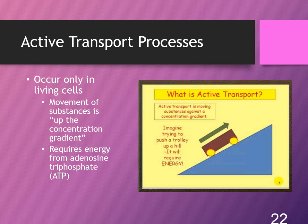As I said before, active transport is a process that utilizes energy — remember that the mitochondria is the powerhouse of the cell and generates ATP, and active transport uses ATP to accomplish its goals. There are three different types: ion pumps, phagocytosis, and pinocytosis. Active transport is characterized by an uphill movement of substances — from lower concentration to higher concentration.